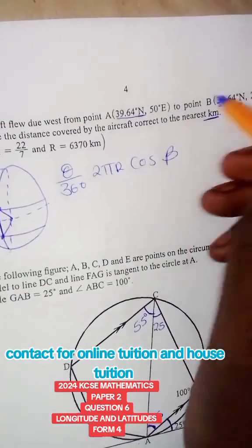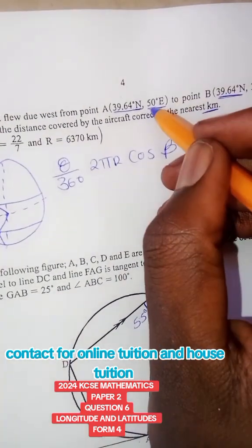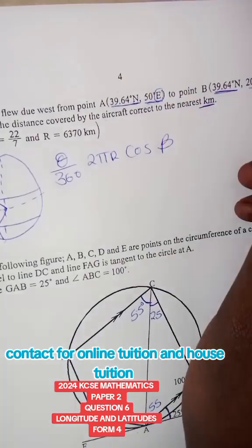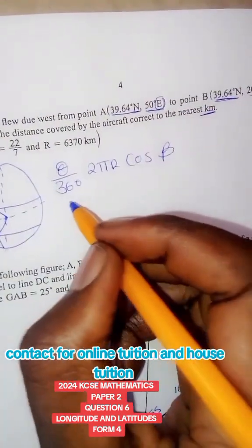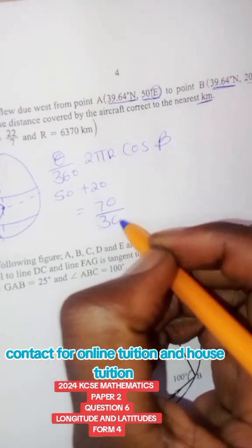Now this one, because it's the constant angle, we call it angle beta. But this one is what we have to find, the difference. So the difference of the ones that are different—it is east and west—we are going to add. Therefore it is 50 plus 20, so I'll have 70 over 360.